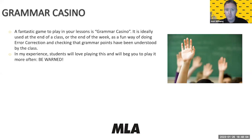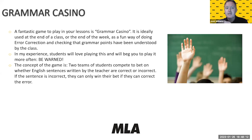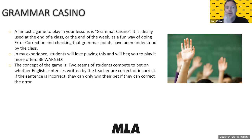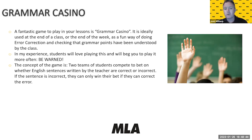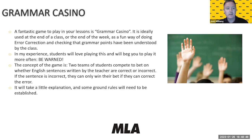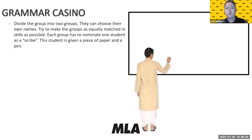Students will love this game — be warned they'll want to play it again and again. The concept is: divide students into two teams. Each team must bet on whether an English sentence written on the board is grammatically correct or incorrect. If the sentence is incorrect, they can only win their bet if they also correct the error. They must identify whether it's correct or incorrect, identify the error, and then correct it.